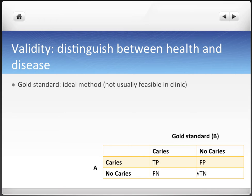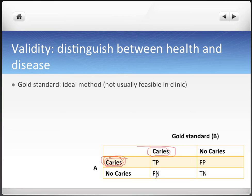The 2x2 validity table has true positive, false negative, false positive, and true negative. A true positive means the patient was seen to have caries, and the gold standard confirms they do. A false negative is when the doctor says the patient has no caries when in fact they do — a false hope. A true negative means the doctor says no caries and they don't have caries. A false positive is a false alarm — the doctor says they have caries when they don't. False results are the bad ones; true results are the good ones.